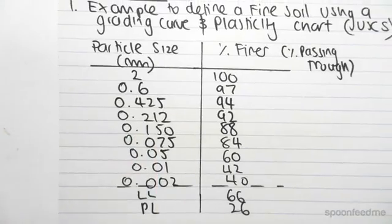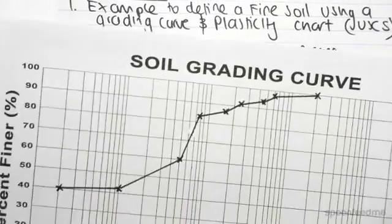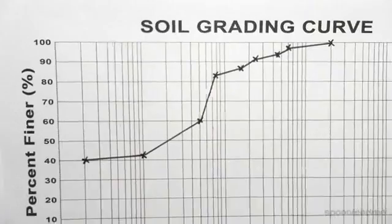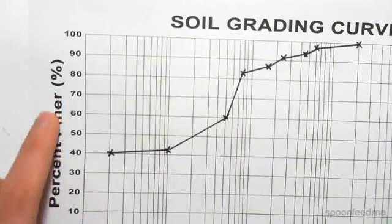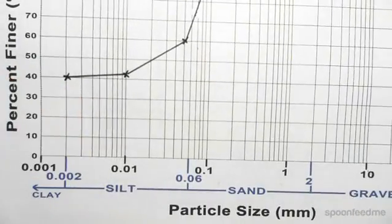So what we can do with these values is we can plot on a soil grading curve. And this is very simple. All it is is the percents finer against the particle size.